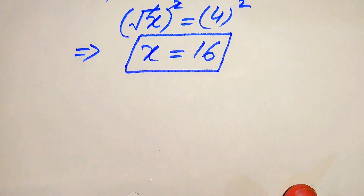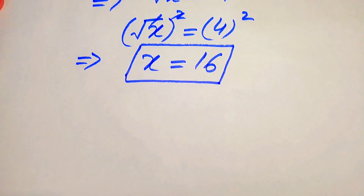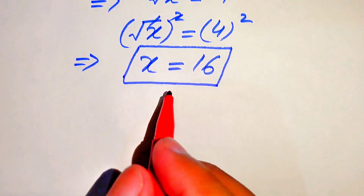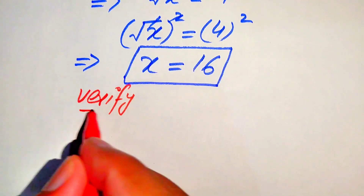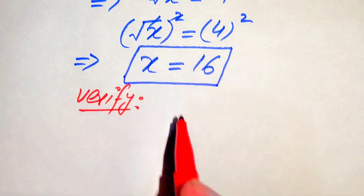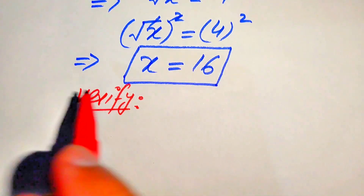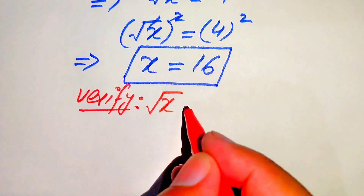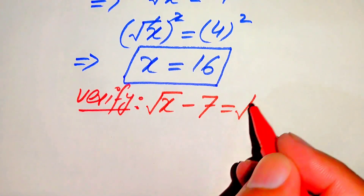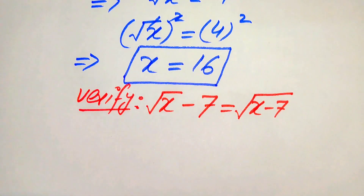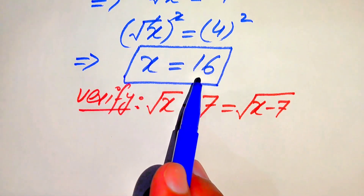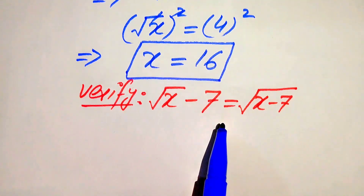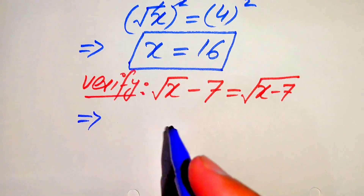Because our given equation is a radical equation, we need to verify this solution and check whether this root satisfies our given equation statement or not — in other words, to check if this is an extraneous root. For this we need to verify. We copy down our given equation: square root of x minus 7 equals square root of x minus 7. Now in the next steps we put x equals 16 on both sides and verify whether both sides are equal or not.